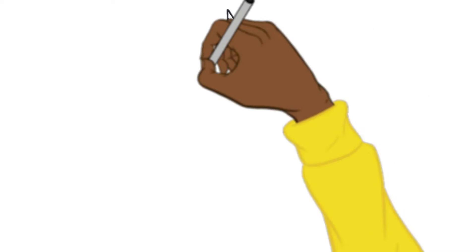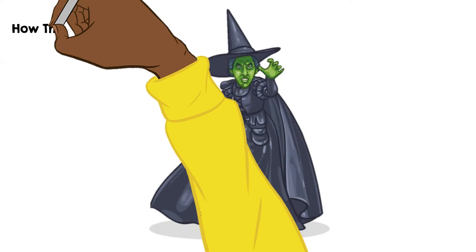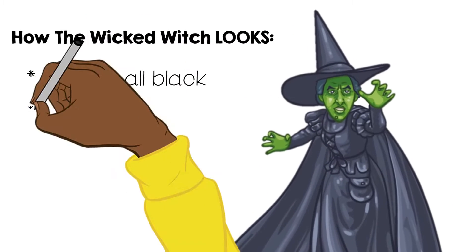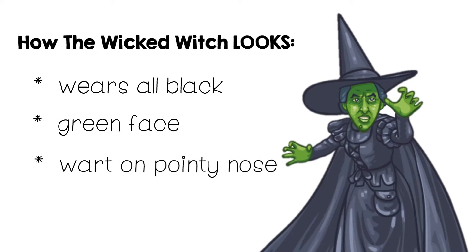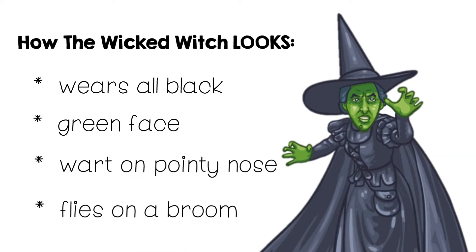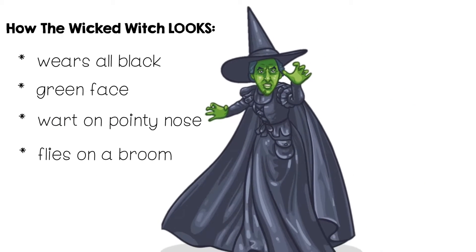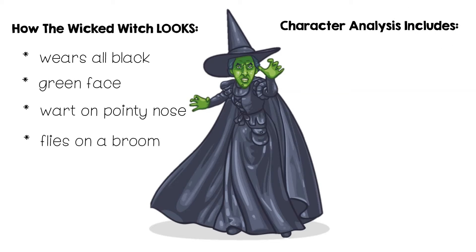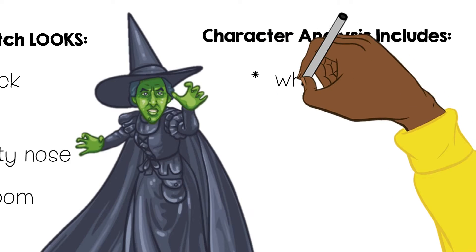Take the Wicked Witch for example. When I look at her, I can describe the way that she looks. She wears all black, has a green face with a wart on her pointy nose, and flies on a broom. But when I want to really get to know her and analyze her character, I don't focus on what she looks like on the outside.